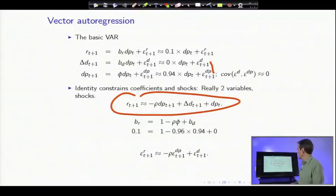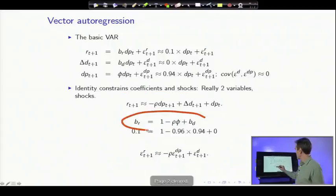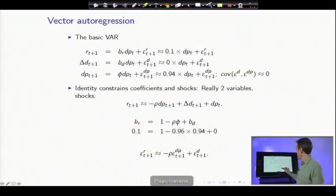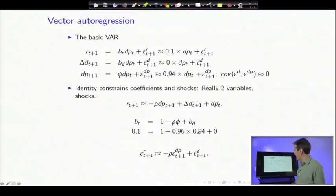The easiest one you can see is let's now take that return identity, apply it to these three regressions. Run regressions of left-hand side and right-hand side on today's dividend yield. That's BR, that's minus rho phi, that's BD, and that's one. So what we find is that, just from the identity, these regression coefficients, since there's only two real variables, there's only two separate regression coefficients, and BR is one minus rho phi plus BD. The numbers I quoted obey that regression coefficient. 0.1 is about one minus 0.96 times 0.94 plus zero.